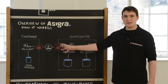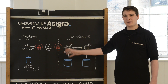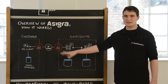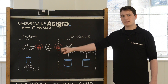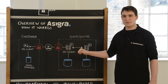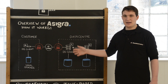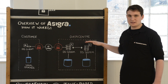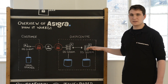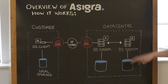So you have one installation of the software that goes out and scans the network, retrieves the data that requires backup, compresses it, encrypts it, and then sends it over to the DS systems which then store it on secure storage.